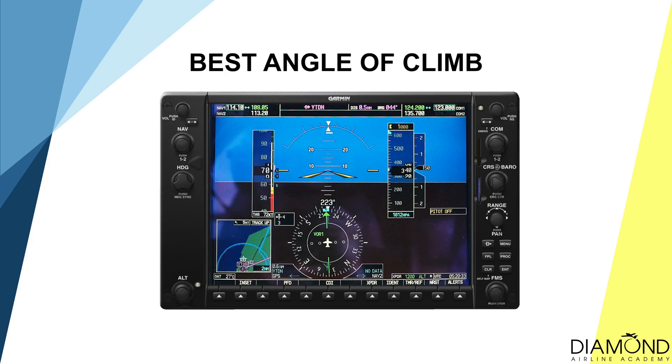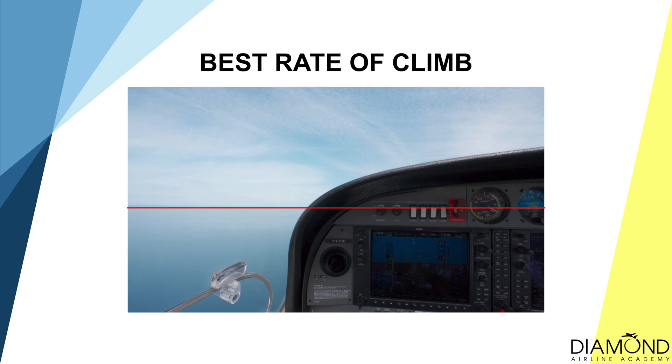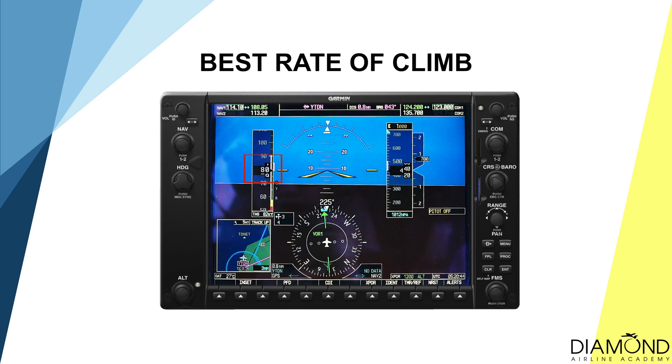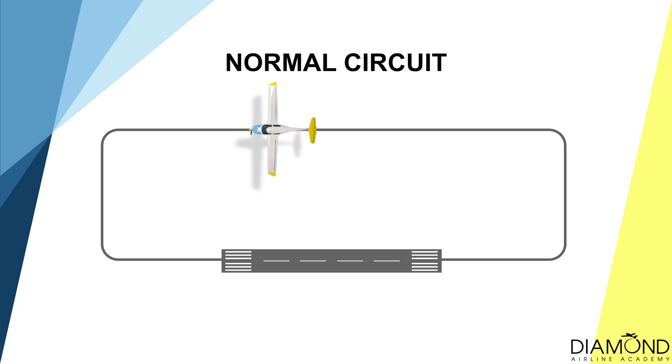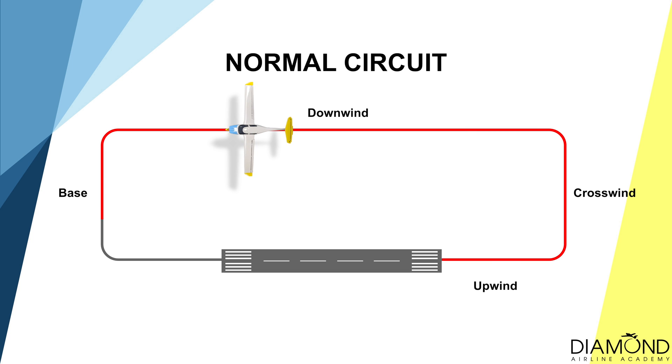After ensuring clearance with all the tall obstacles on the initial climb out, we can now resume to a best rate of climb attitude, just like a normal circuit. When conducting the best angle of climb, the climb speed should be at 70 knots. Whereas when best rate of climb is resumed, lower the nose attitude a little and allow the aircraft to accelerate to 80 knots. When the aircraft reaches 300 feet, conduct the after-takeoff checks, and continue with the upwind, crosswind, downwind and base leg.